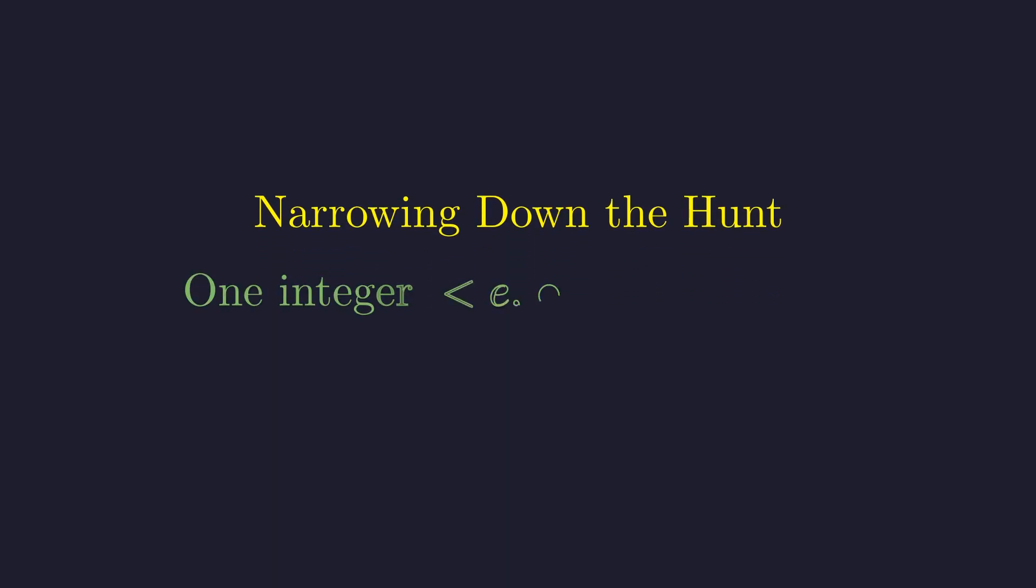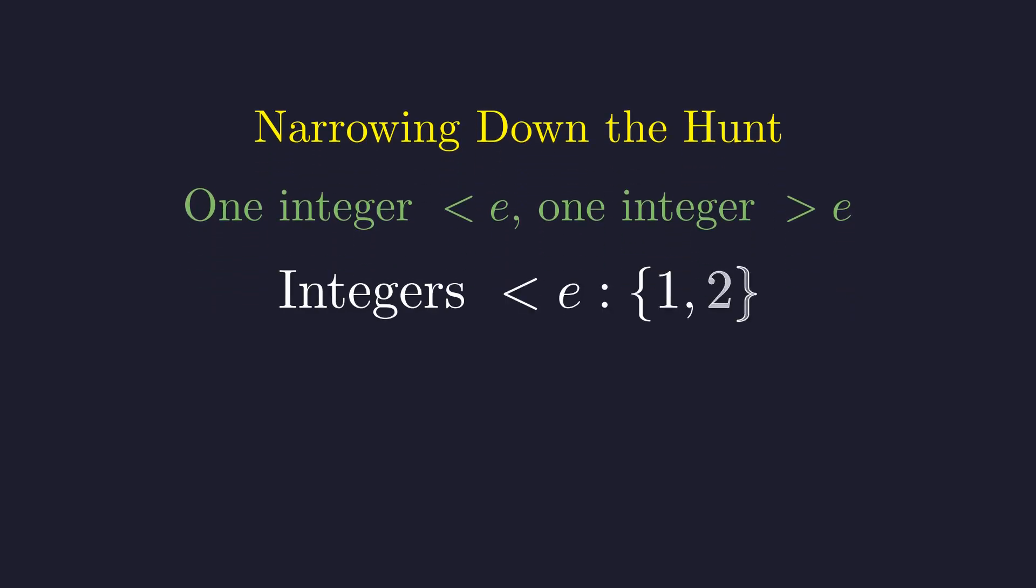This insight just narrowed our infinite search down to a handful of possibilities. For f(x) to equal f(y) with different integers, one must be on the increasing part of the curve, and the other on the decreasing part. The only positive integers less than e are 1 and 2. So our smaller number must be either 1 or 2.